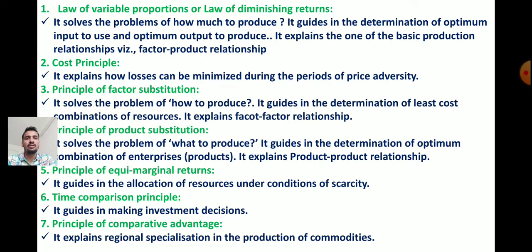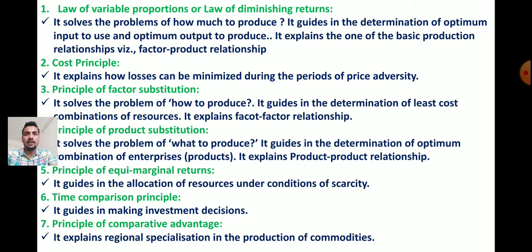The Law of Variable Proportion or Law of Diminishing Returns solves the problem of how much to produce. It guides the determination of optimum input to use and optimum output to produce. It explains one of the basic production relationships — the factor-product relationship.